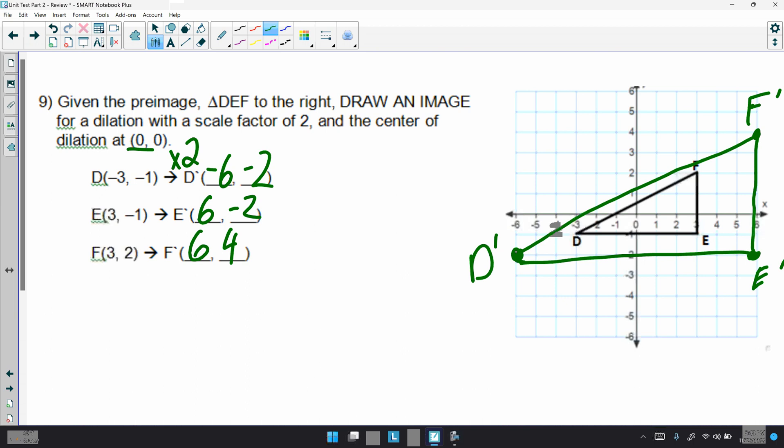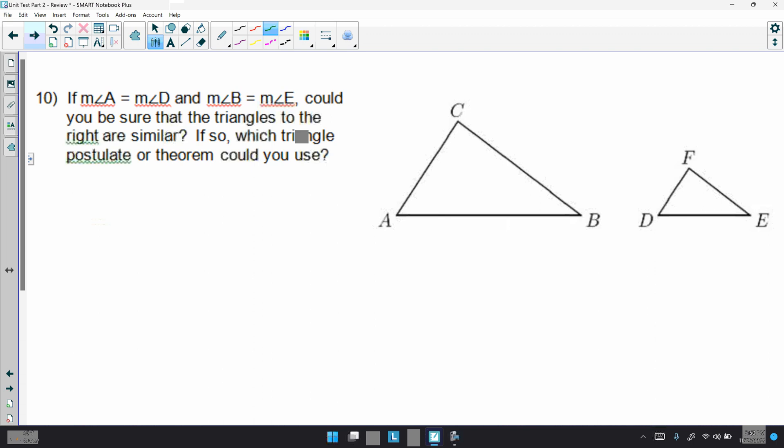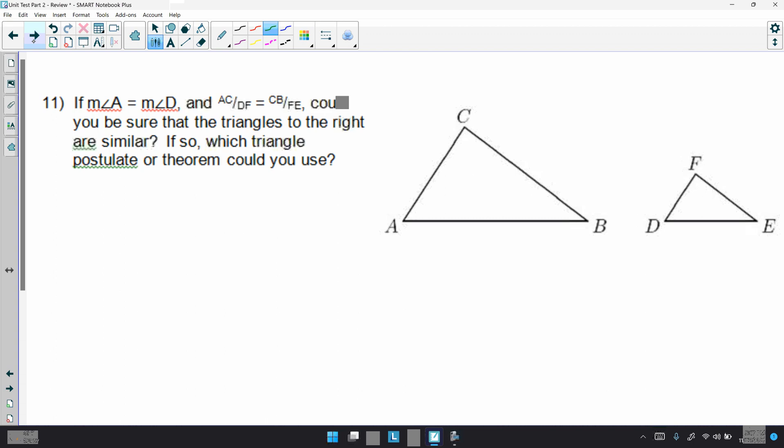Number 10. It says, if angle A is congruent or is equal to D, and angle B and E are congruent or equal to. Let's see. Could you be sure that the triangles to the right are similar? If so, which triangle postulate or theorem could you use? Well, we have two angles marked. And, we do have a postulate for that, which was angle, angle. So, yes, those two triangles are similar. If you look at number 11, if the measure of angle A and D are congruent, I'll mark that. And, AC is proportional to DF. Remember, in class, we used the little squiggly worms to show proportional sides. And, then they said CB and FE. So, CB, right here. And, FE. Well, if we go around the triangle, it spells the donkey postulate. And, we can't use the donkey postulate. So, these are not similar.